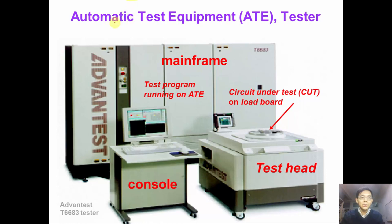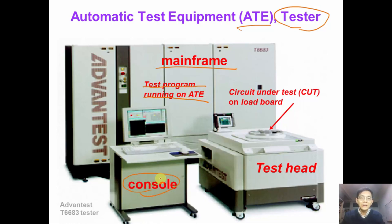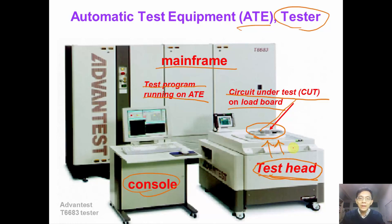This picture shows a typical automatic test equipment, or ATE — sometimes we just call it a tester for short. A tester looks just like a mainframe computer with a test program running on the ATE. There is a console for test engineers to develop the test program. The circuit under test, or CUT, sits on the load board on top of the test head, which provides electrical signal control to the circuit under test via the connection to the load board.